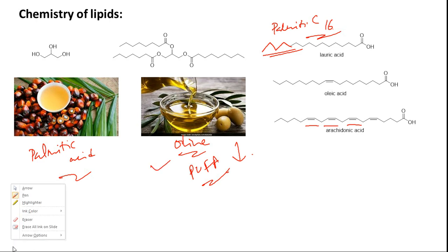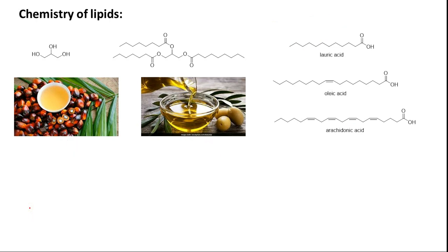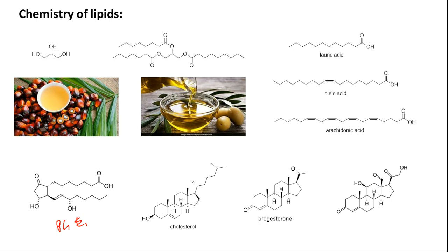From fatty acids, in our biochemical system, we can also have chemicals called prostaglandins — for example, prostaglandin E1. This is a signaling molecule, but it is derived from fatty acids and is highly lipophilic in nature, so we can call it a lipid molecule. Another major portion of important biochemicals that are part of lipids are steroidal molecules. Cholesterol is a very common ingredient in lipophilic food materials, especially of animal origin.